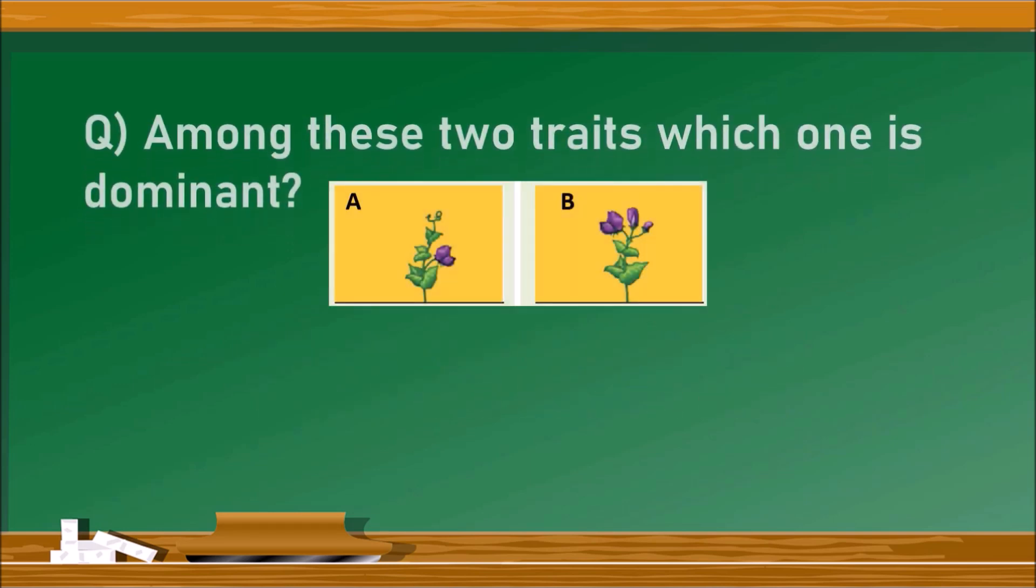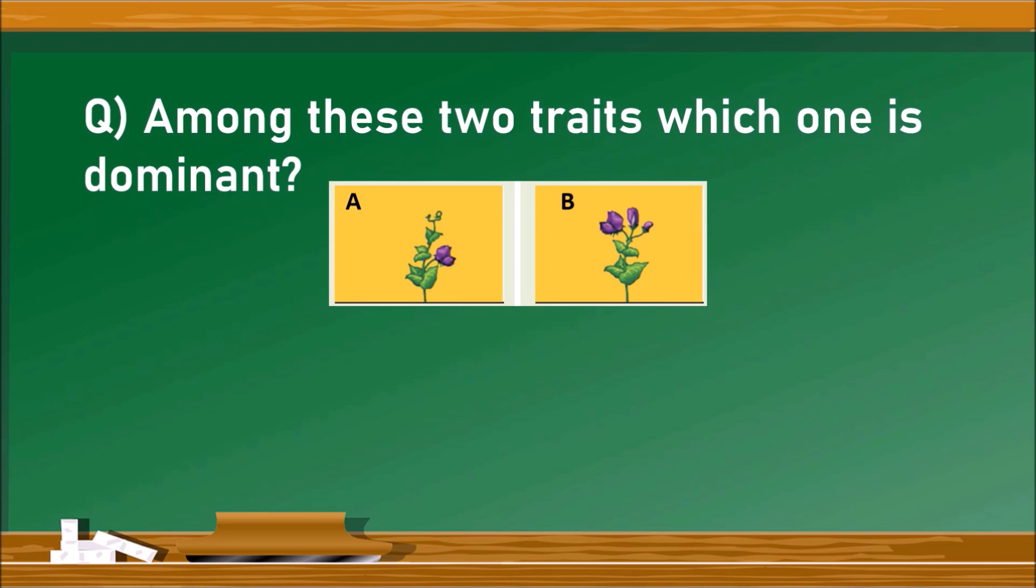Next question: Among these two traits, which one is dominant? Two traits are given: axial flower position and terminal flower position. Among these two, the axial flower position is the dominant trait.